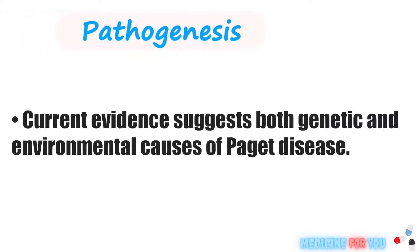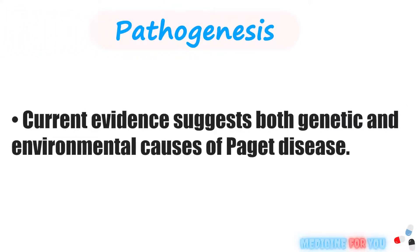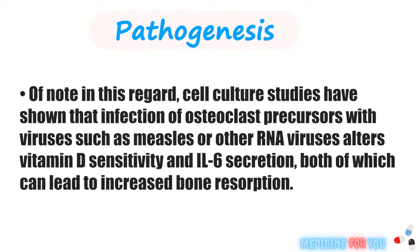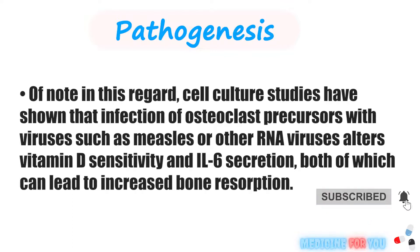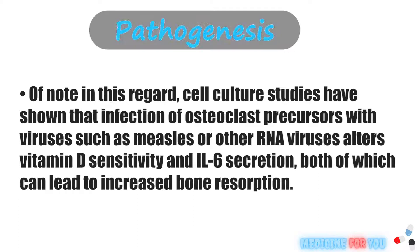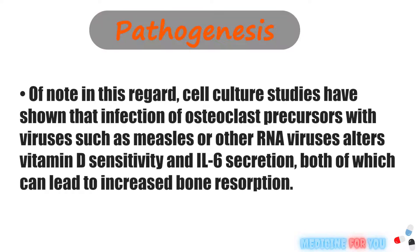Current evidence suggests both genetic and environmental causes of Paget disease. Approximately 50% of familial Paget disease and 10% of sporadic cases harbor mutations in the SQSTM1 gene. Cell culture studies have shown that infection of osteoclast precursors with viruses such as measles or other RNA viruses alters vitamin D sensitivity and IL-6 secretion, both of which can lead to increased bone resorption.